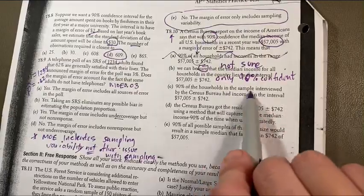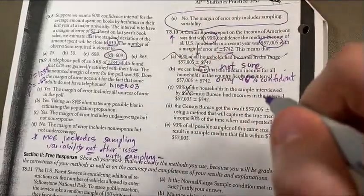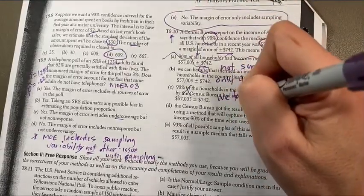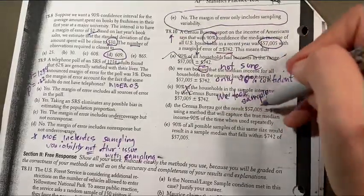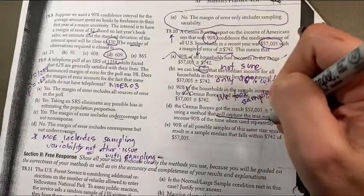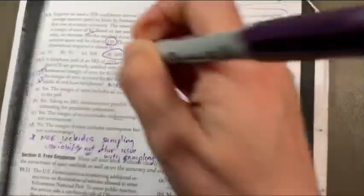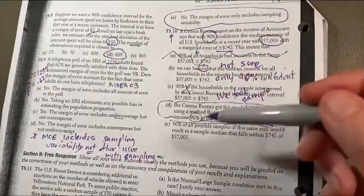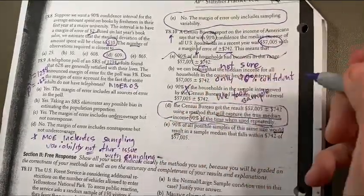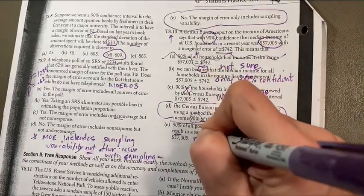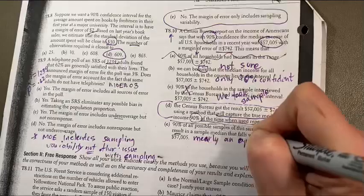So 90% of the households in the samples interviewed had these incomes. No, that's no. We took a single sample. So what is D? The Census Bureau got a result of 57 plus or minus this using a method that will capture 90% of the time when used repeatedly. That's exactly what we did. So what does that look like? We'll draw a picture, but let's look at E. E states 90% of all possible samples in this sample side would. No, it's merely approximation that it would. So it's merely an approximation that it would.